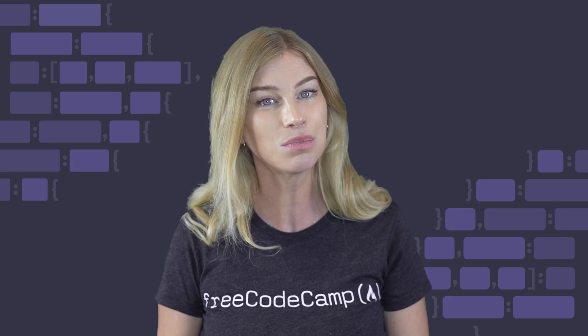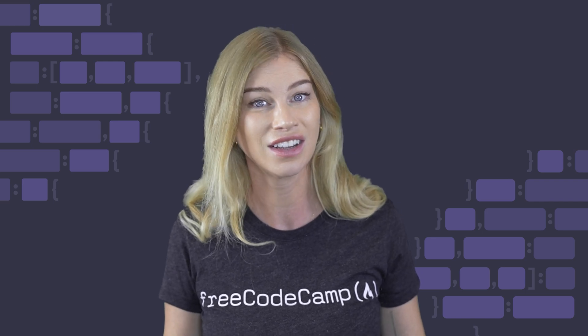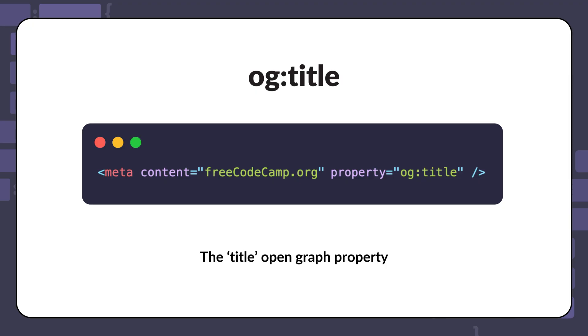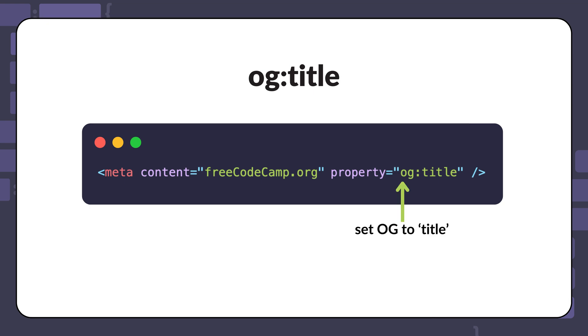You can set these properties through a collection of meta elements inside your HTML head section. The first important OG property to include would be the title. Here is an example of setting the OG title for the freeCodeCamp homepage. For the property attribute, you will need to specify that this is an OG colon title. The content attribute is where you will write the title you want displayed for social media sites.